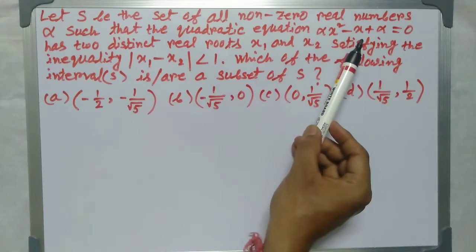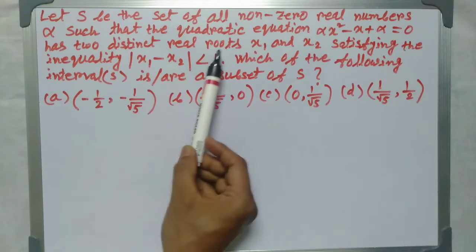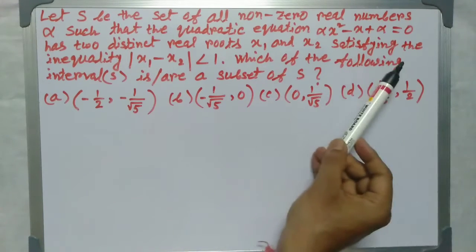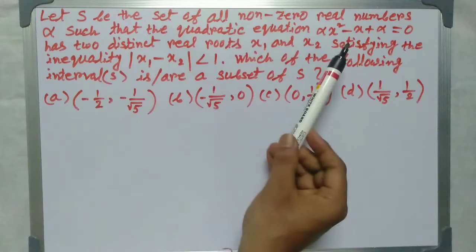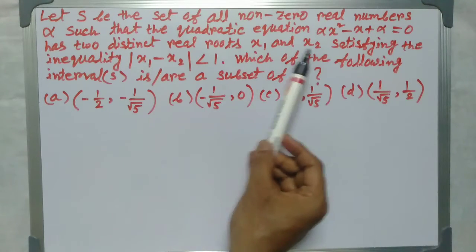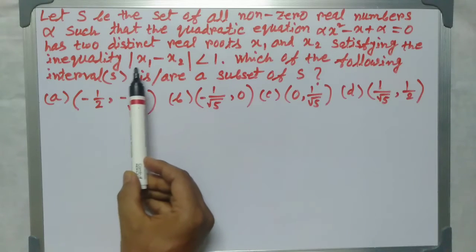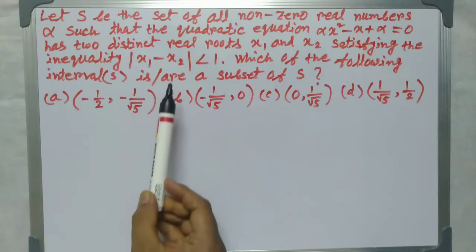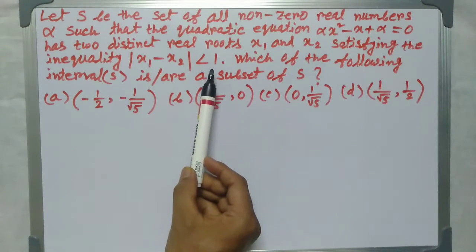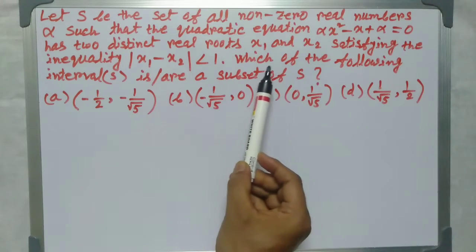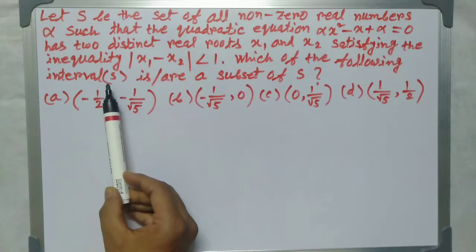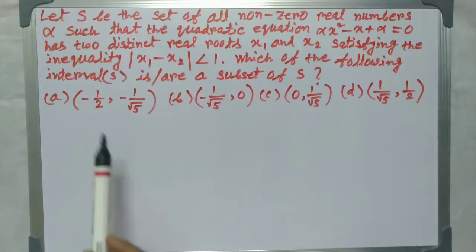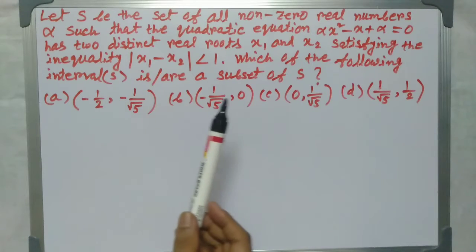The equation has two distinct real roots x1 and x2, satisfying the inequality |x1 - x2| < 1. The question asks which of the following intervals is or are a subset of S — one or more correct answers.